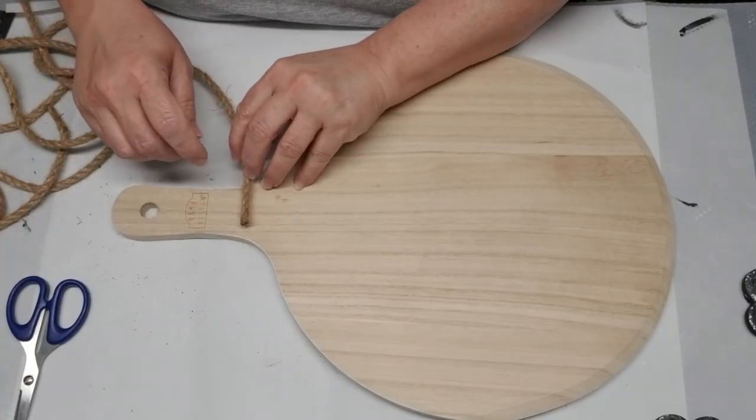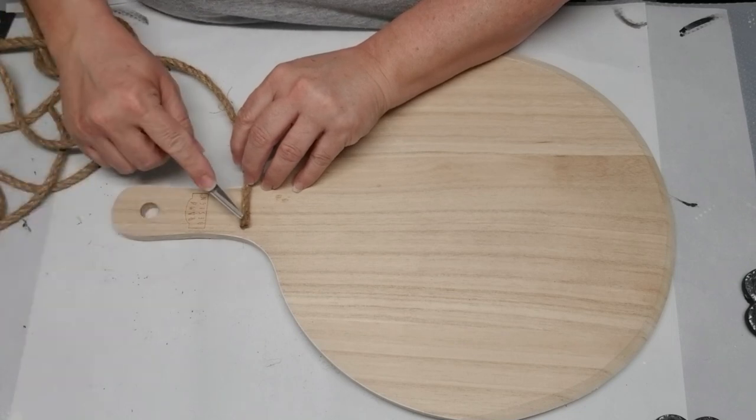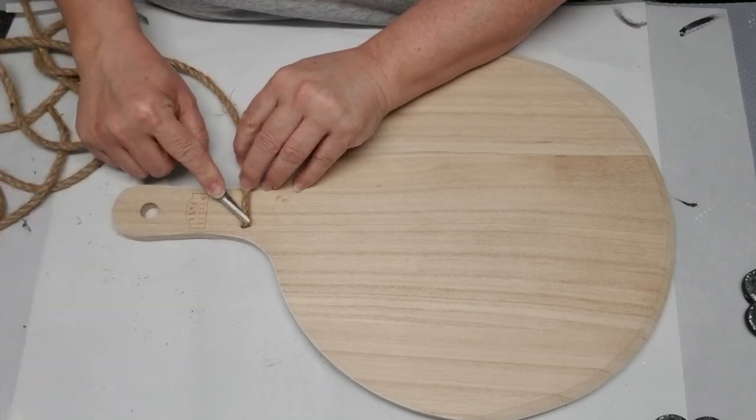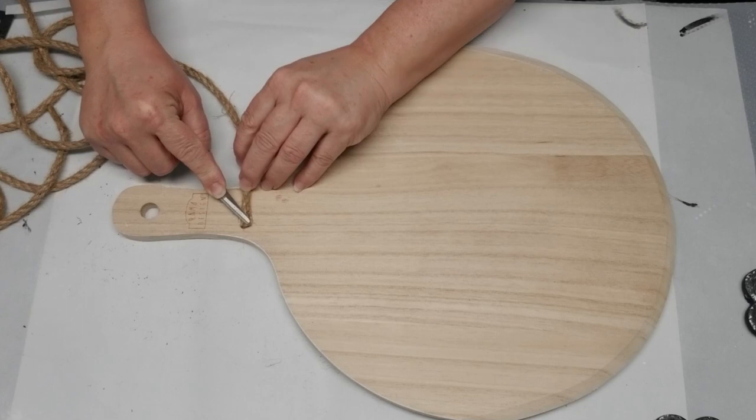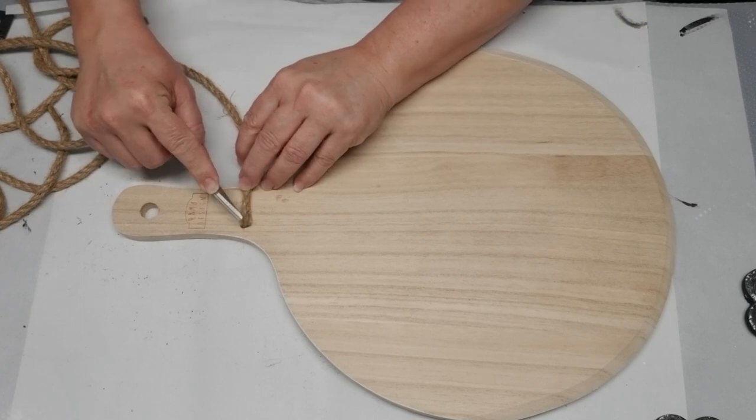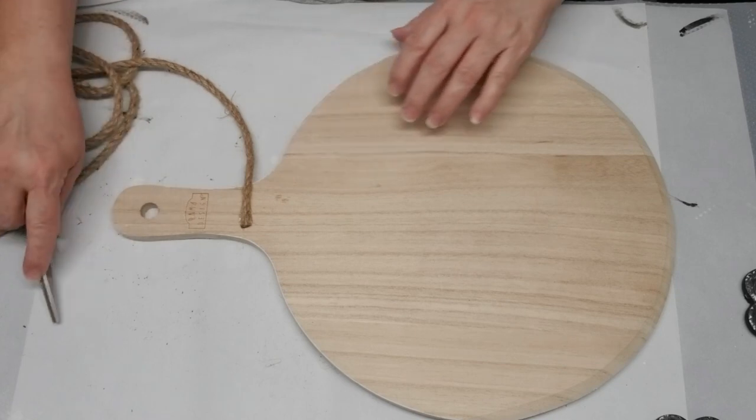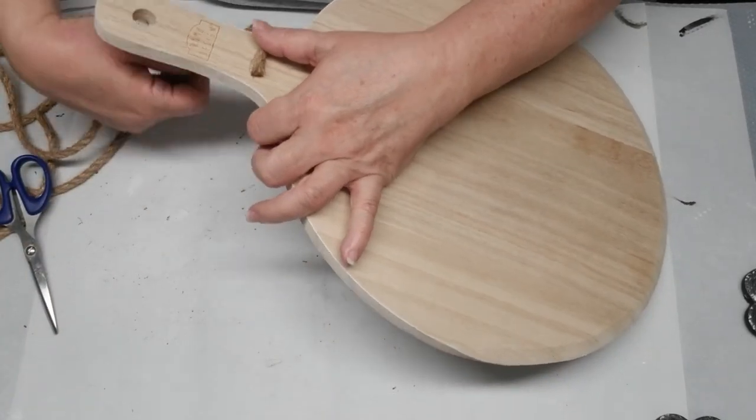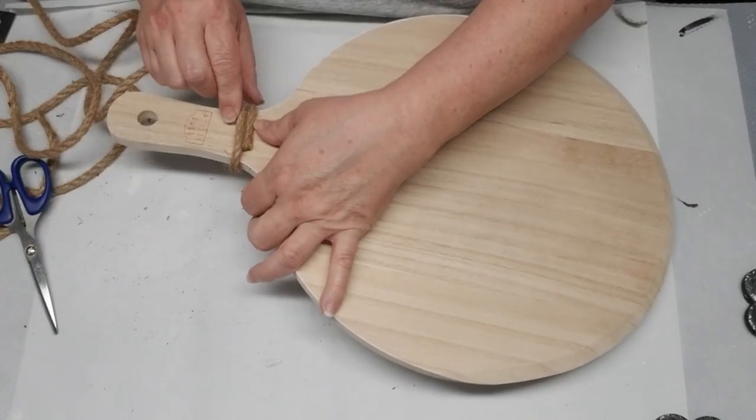Since I had some leftover jute rope, I'm going to put some on the handle. I'm going to wrap it around the same way that I did on the handle of the basket, so I'm going to start off with some hot glue and then wrap it around six or seven times, gluing every second or third time it comes around the back.